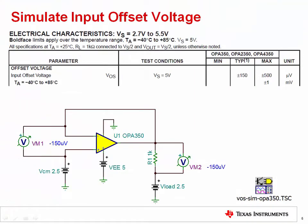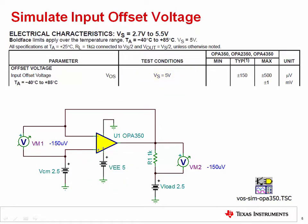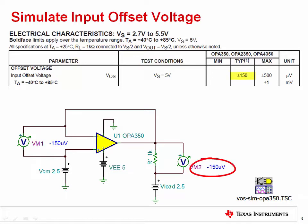Most op amp SPICE models include the effects of offset voltage. Several external conditions, such as power supply voltage and common mode voltage, affect the offset voltage on a real-world device, and these effects are also included in the simulation model. In order for the simulation result to match the offset specifications in the datasheet table, the same test conditions must be applied. In this example, the power supply is set to 5 volts, the common mode voltage is set to mid-supply or 2.5 volts, and the load is connected to mid-supply. The typical offset specification is 150 microvolts, and the simulated offset is also 150 microvolts. The goal of our models is to target typical op amp performance.